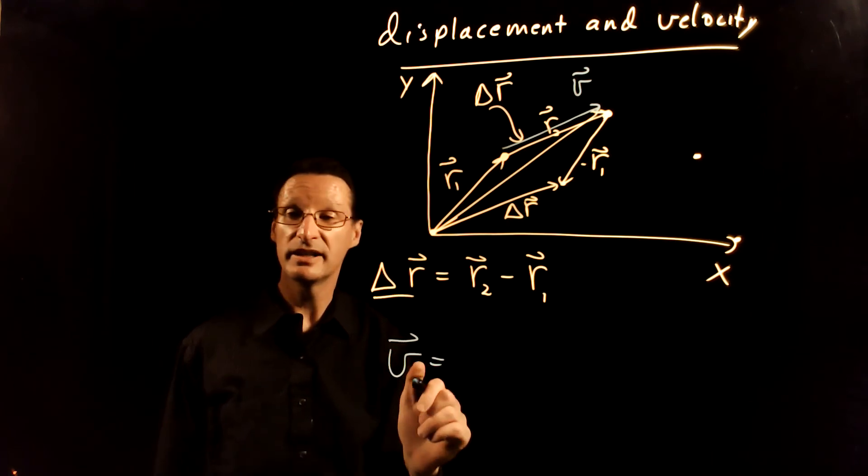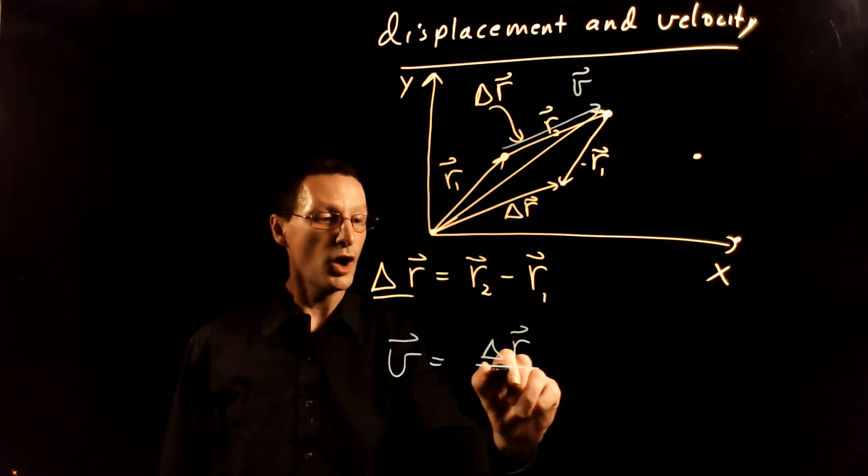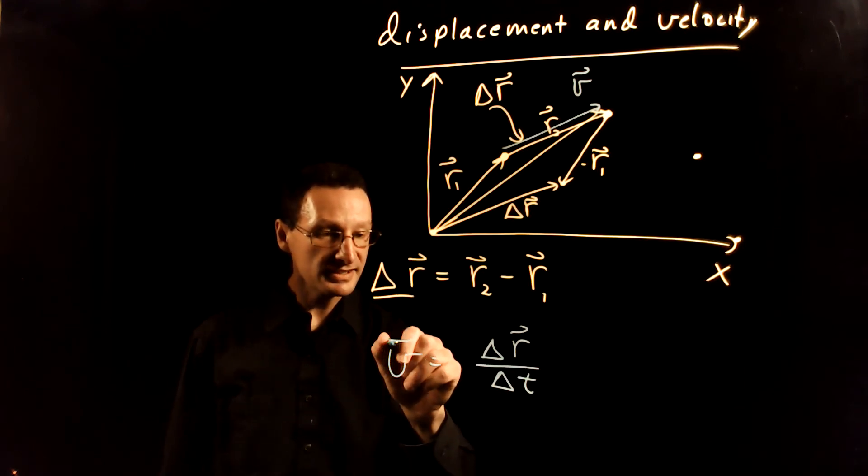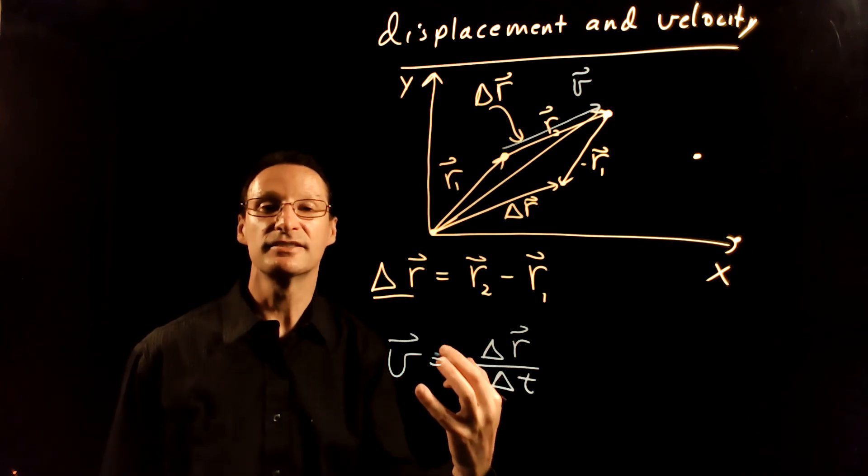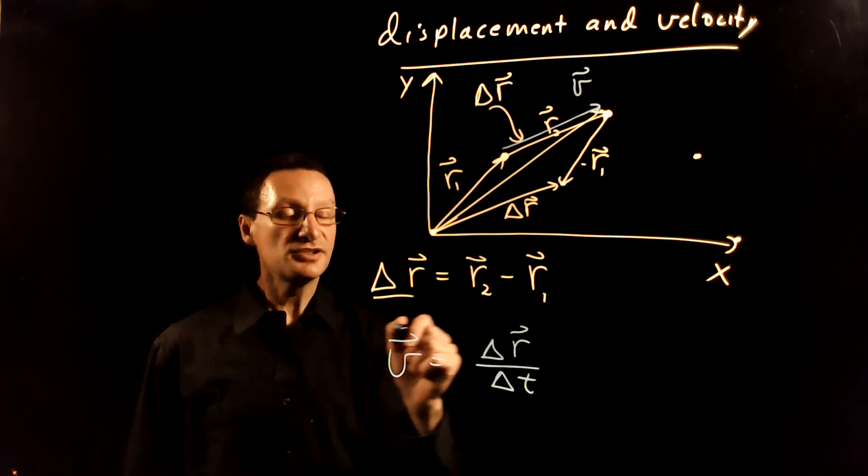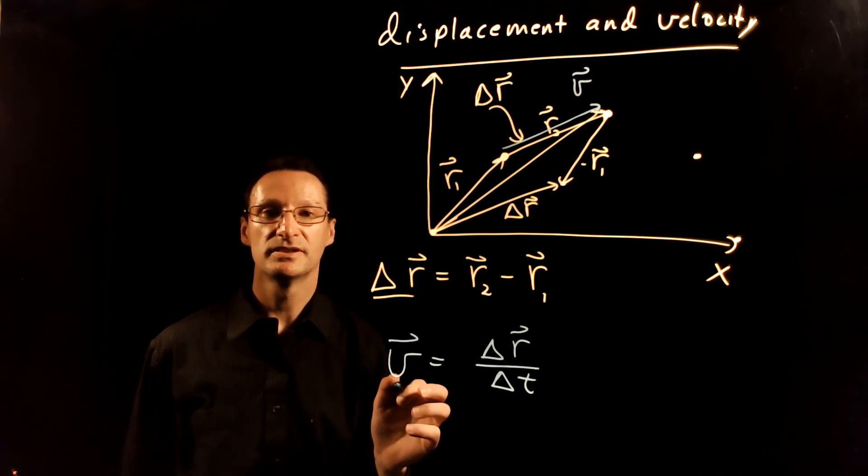The reason that this is true is that the velocity vector is the displacement vector over the time interval. And so because the velocity vector gets its vectorness, its direction from the displacement vector, these two are guaranteed to be in the same direction.